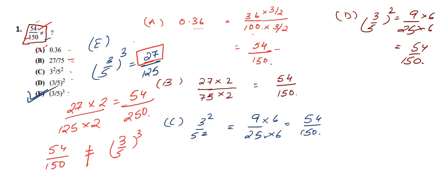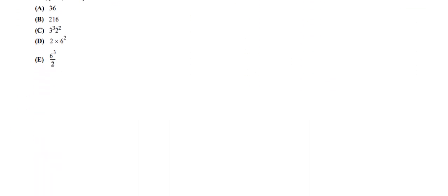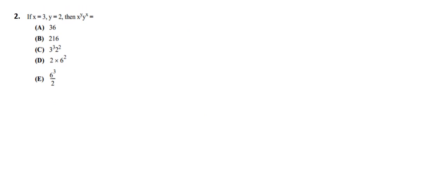Option E is the correct answer. Now let us move on to question number 2. In question 2, if x equals 3 and y equals 2, then x to the power y multiplied by y to the power x equals what? So we have x to the power y into y to the power x — that is 3 squared into 2 cubed. 3 squared is 9, and 2 cubed is 8, giving us 72.